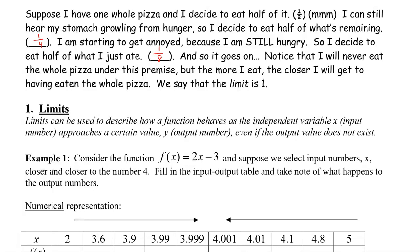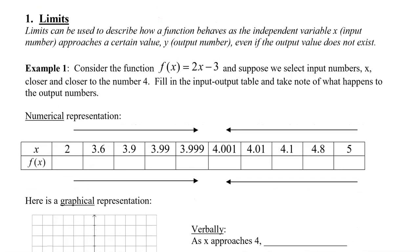Let's take a look at this example. Consider the function f of x equals 2x minus 3, and suppose we select input numbers x closer and closer to the number 4. Fill in the input and output table below, which is the numerical representation, and take note of what happens to the output numbers. I'm going to approach the number 4 from either side of it.